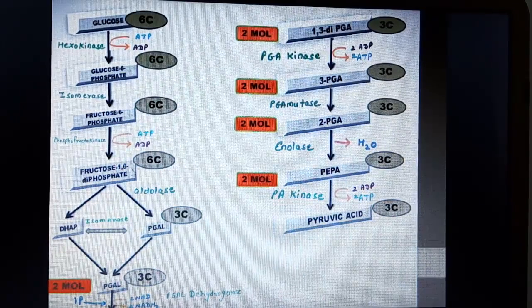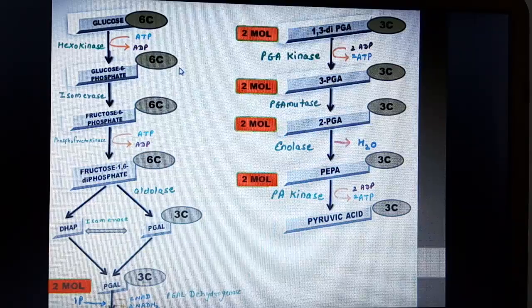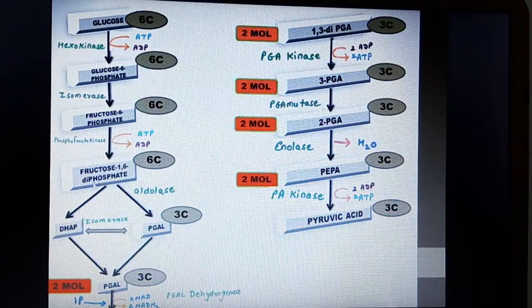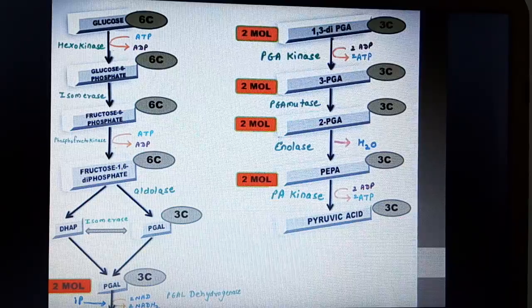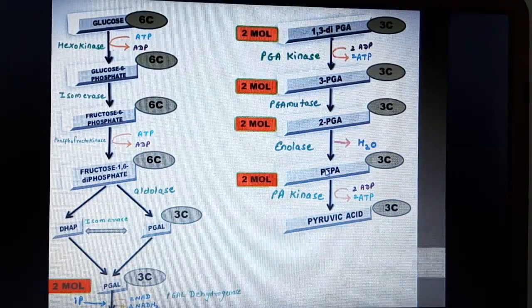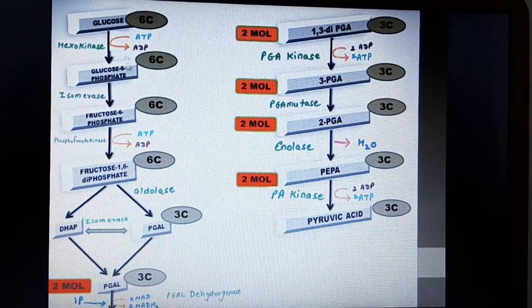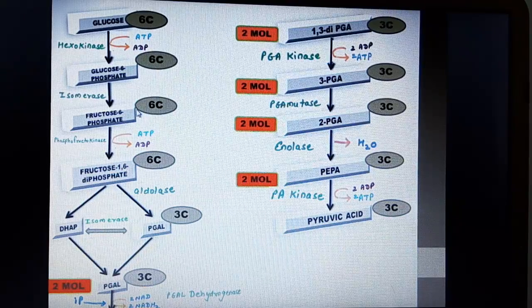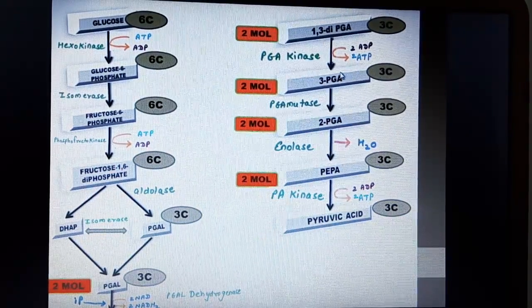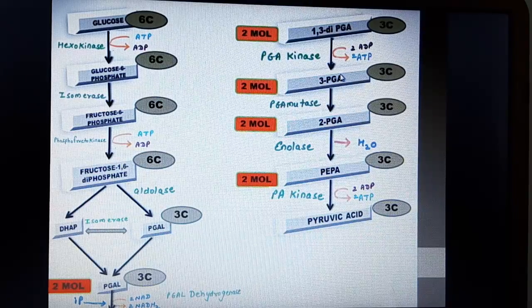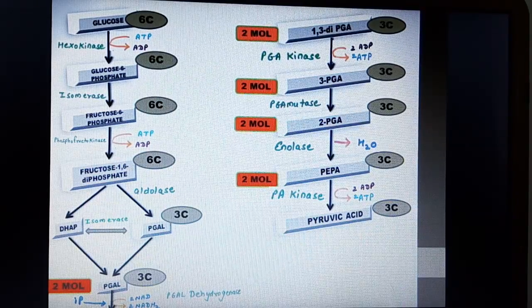So how it goes. If I revise the entire glycolysis. I will say glucose, glucose, fructose, fructose, DHAP se bana PGAL. Next ayah PGAL. 1, 3, DIPGA, 3 PGA, 2 PGA, PEP, PA, PA. NADH, ATP, Kuch nahi, PANI, ATP. This is how you can remember all the glycolysis steps.